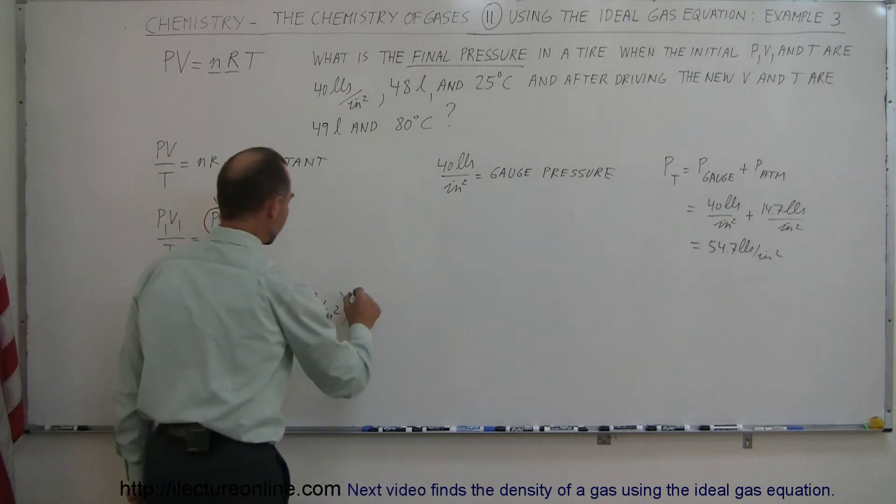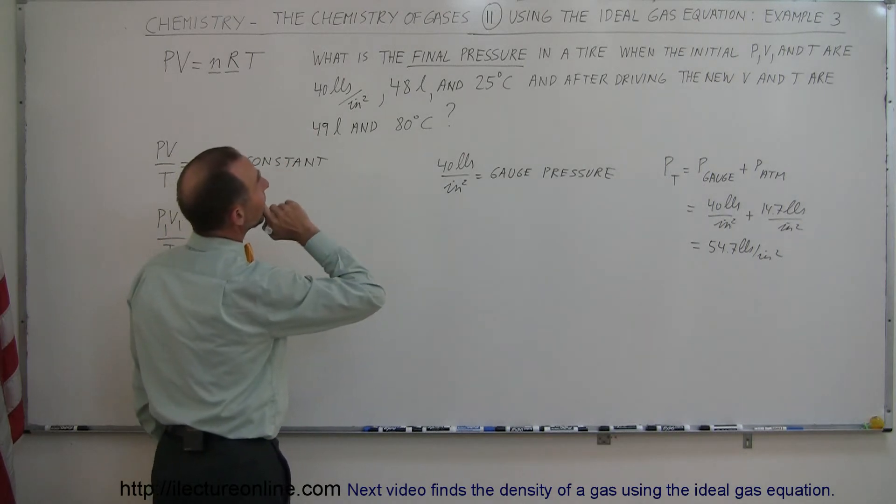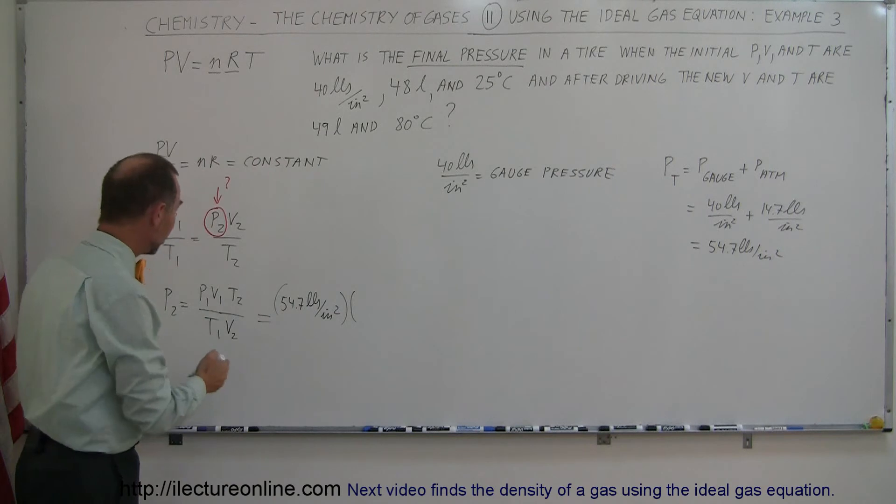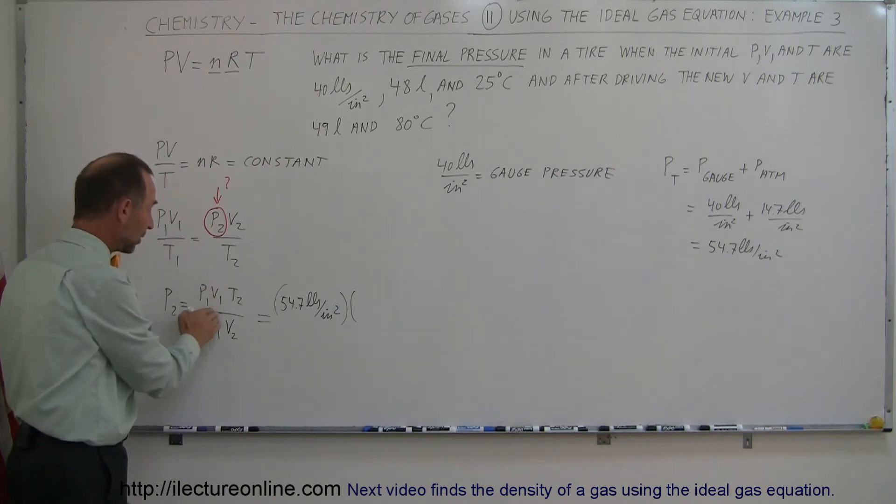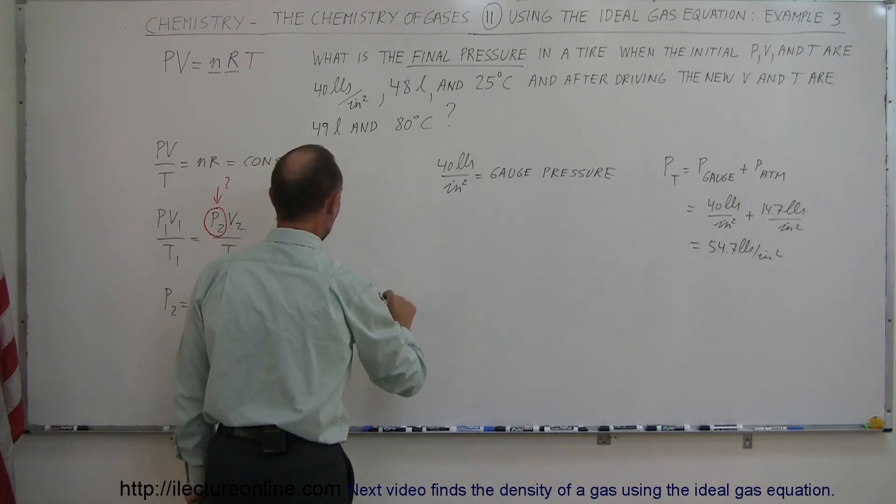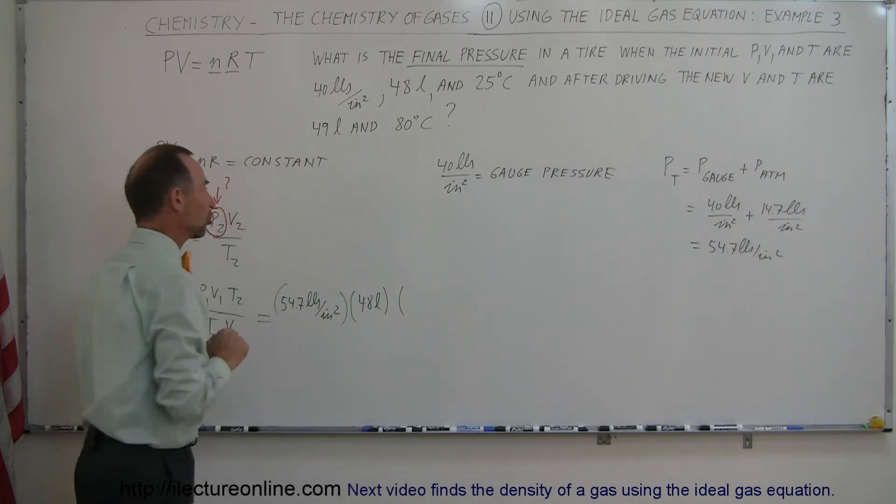Volume one was given to us in liters, and volume two is given to us in liters as well. Since that will cancel out, because we have volume one divided by volume two, we do not need to convert that. So we can go ahead and write 48 liters.